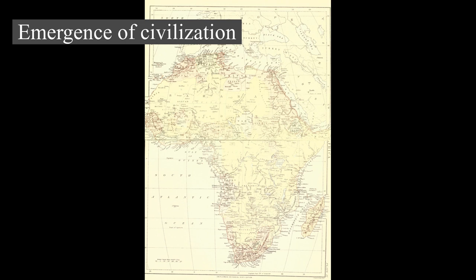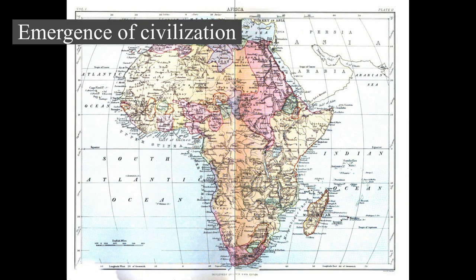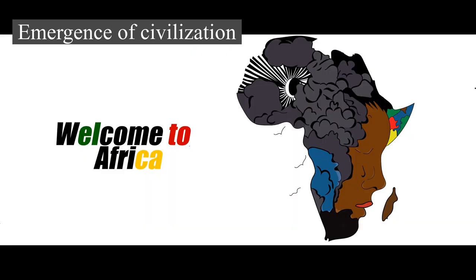However, the warming and drying climate meant that by 5000 BC, the Sahara region was becoming increasingly dry and hostile. Around 3,500 BC, due to a tilt in the Earth's orbit, the Sahara experienced a period of rapid desertification. The population trekked out of the Sahara region towards the Nile valley, where they made permanent or semi-permanent settlements. A major climatic recession occurred, lessening the heavy and persistent rains in central and eastern Africa, and dry conditions have prevailed in eastern Africa and increasingly in Ethiopia.